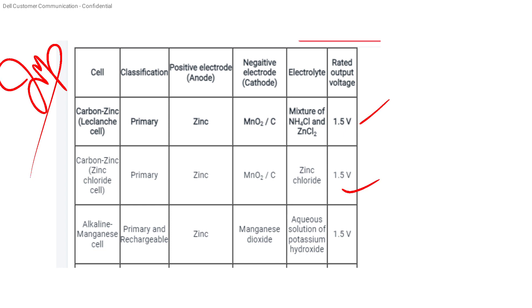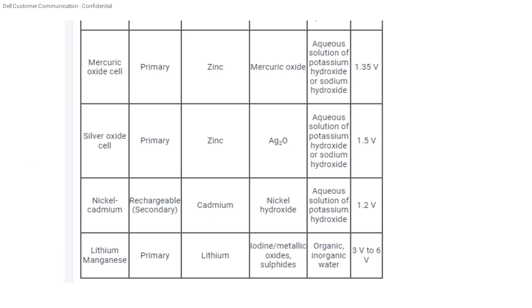The alkaline manganese cell is a primary rechargeable cell. Anode is zinc, electrolyte is aqueous potassium hydroxide solution, rated voltage is 1.5V. The mercury oxide cell is primary — anode is zinc, electrolyte is sodium hydroxide, voltage is 1.35V. The silver oxide cell is primary — electrolyte is sodium hydroxide, voltage is 1.5V. Nickel cadmium is rechargeable (secondary) — anode is cadmium, cathode is nickel hydroxide, electrolyte is aqueous potassium hydroxide solution, voltage is 1.2V.